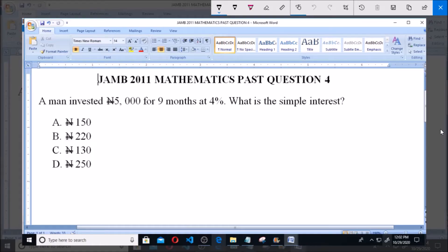Hello, good day and welcome. I will be answering JAMB 2011 mathematics past question 4. A man invested 5,000 naira for nine months at 4%. What is the simple interest? A: 150 naira, B: 220 naira, C: 130 naira.